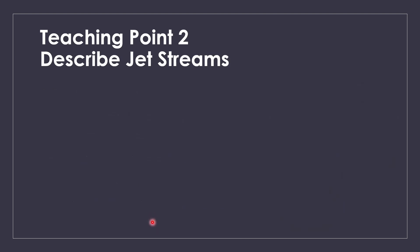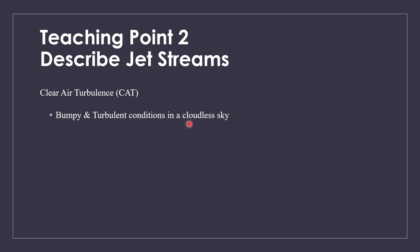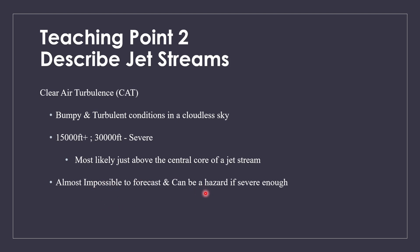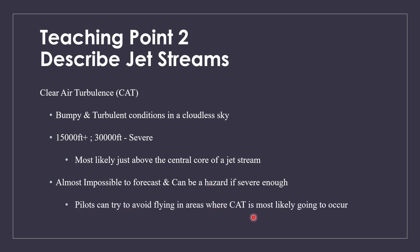Finally, the last thing we'll talk about is clear air turbulence, or CAT. Clear air turbulence is bumpy and turbulent conditions in a cloudless sky — a clear sky does not necessarily mean there are no dangers. CAT usually starts at 15,000 feet, but at 30,000 feet it can be really severe. It is most likely to occur just above the central core of a jet stream, and unfortunately it is almost impossible to forecast. Pilots are advised to avoid flying in areas where CAT is most likely to occur.